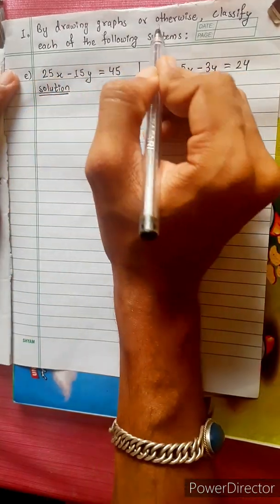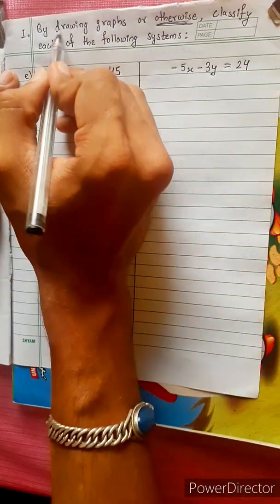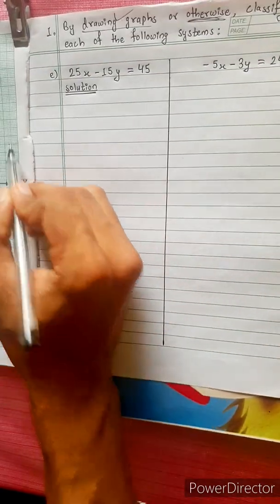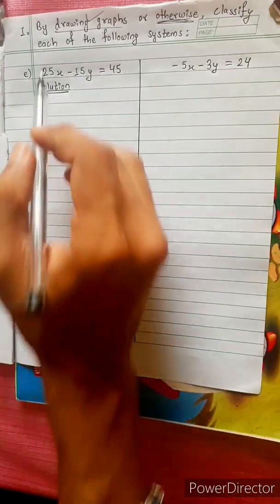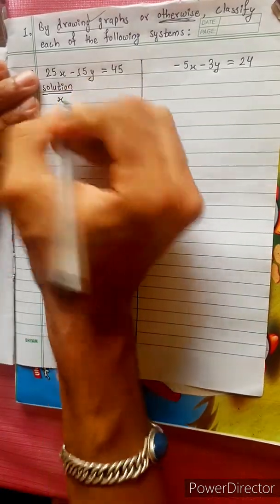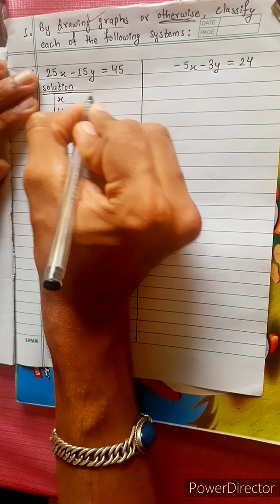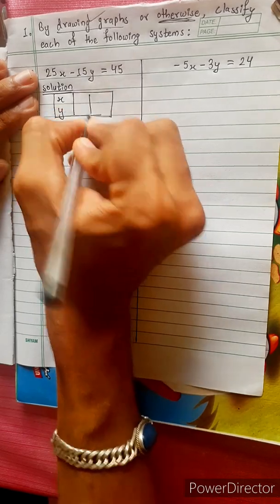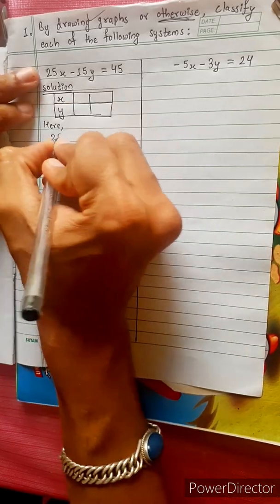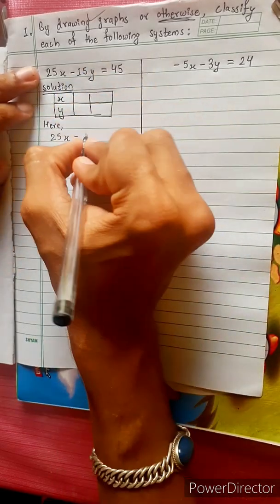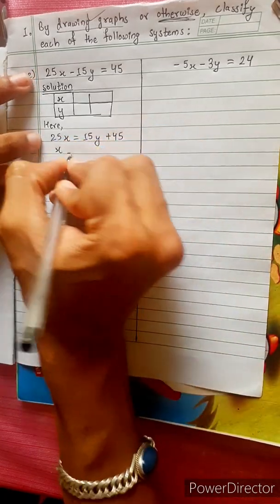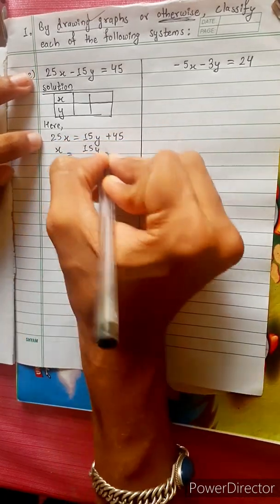By drawing a graph or otherwise, we will find out how to plot this equation. We will find the points for x and y. We will join the points. The equation is 25x minus 15y, which gives x equals 15y plus 45.